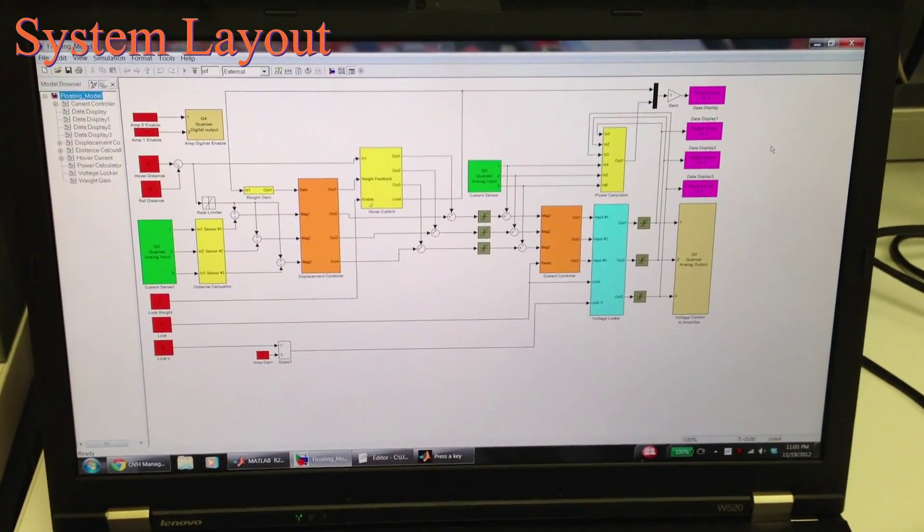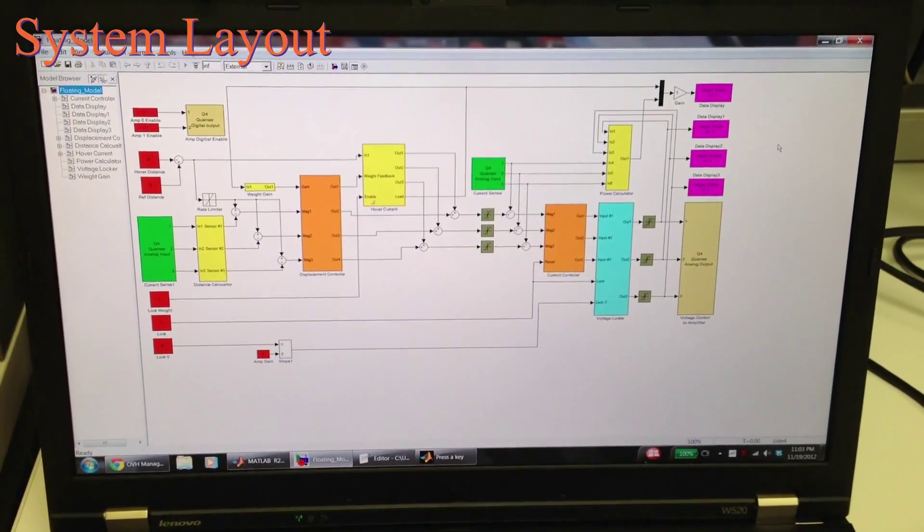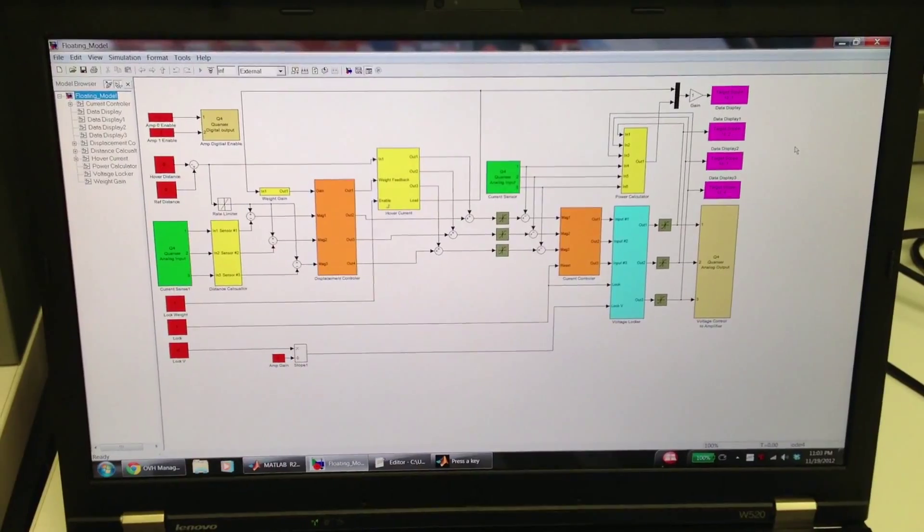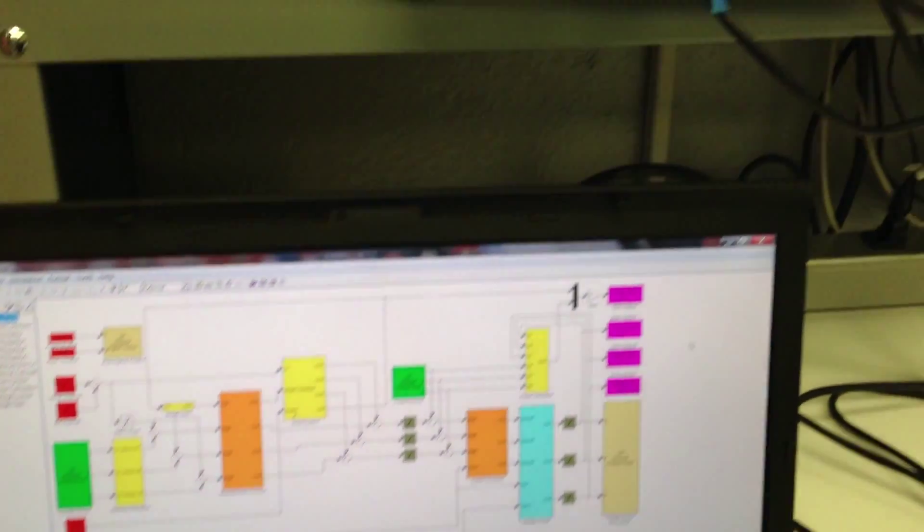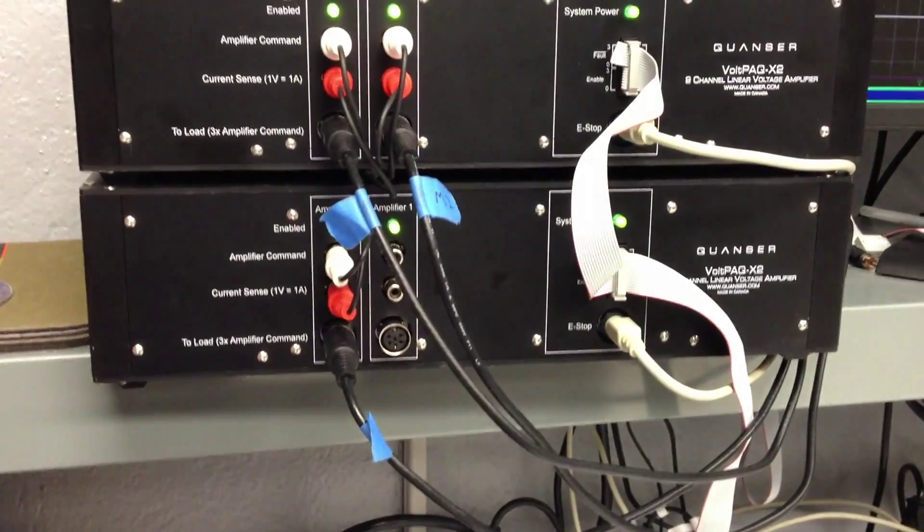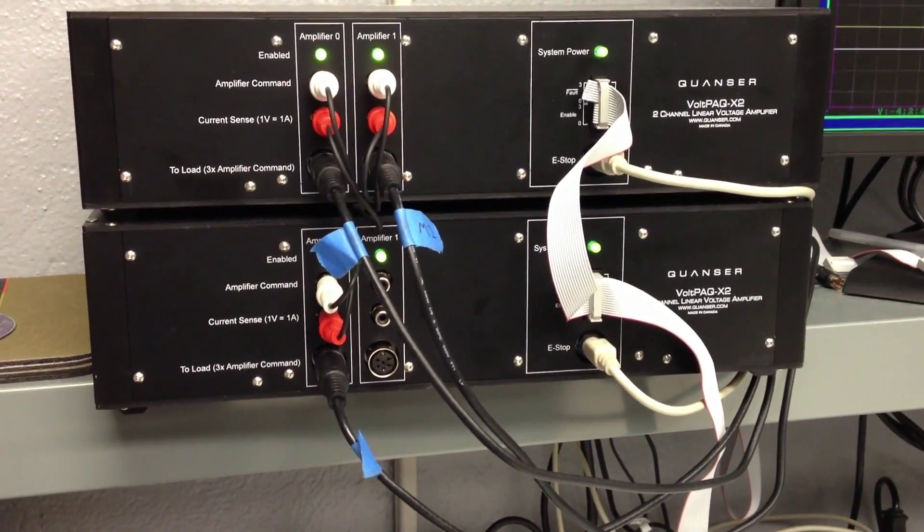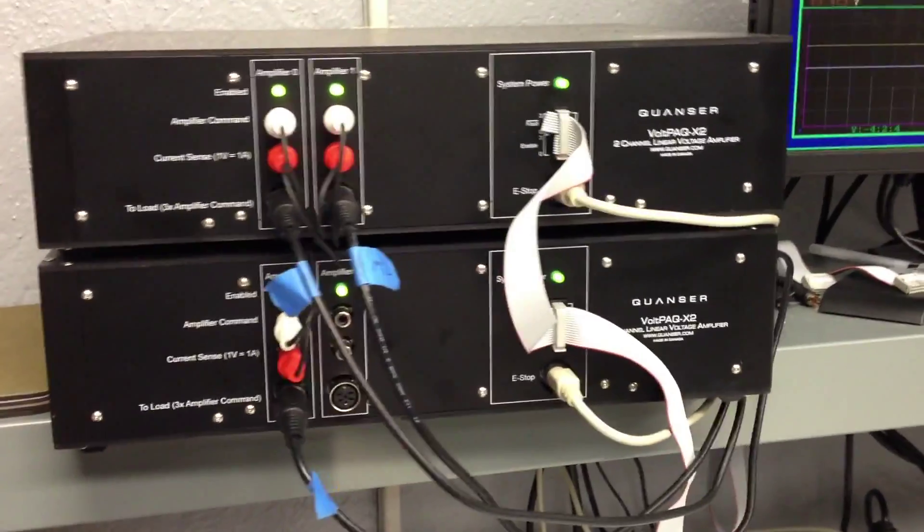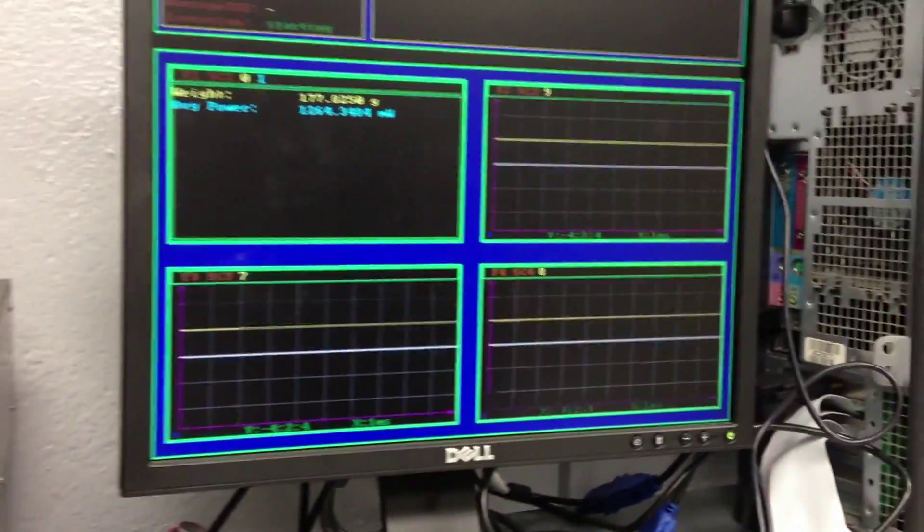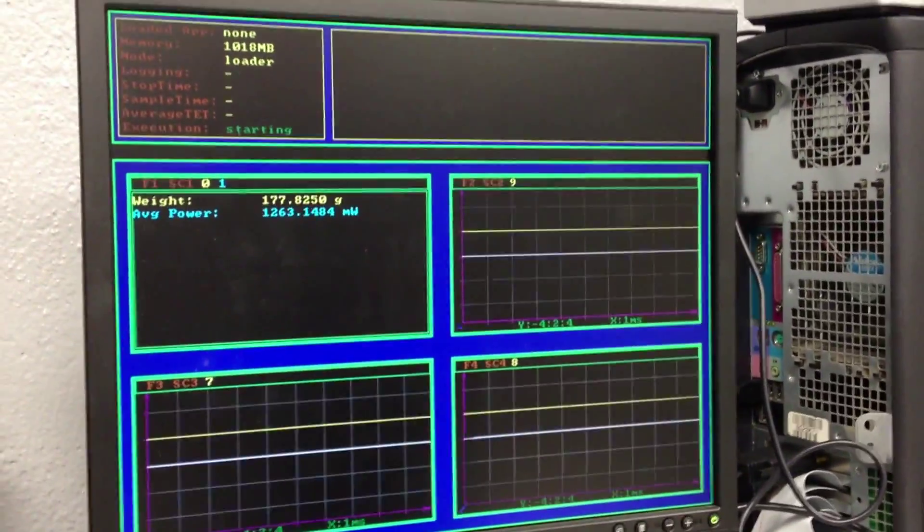In this part of the video, I'm going to walk you through all the equipment needed for us to achieve our design objectives. Starting with the host machine, which compiles our Simulink model for our real-time machine to run. Above that, we have our dual-channel Kwanzer linear voltage amplifiers, which are used to power our electromagnets.